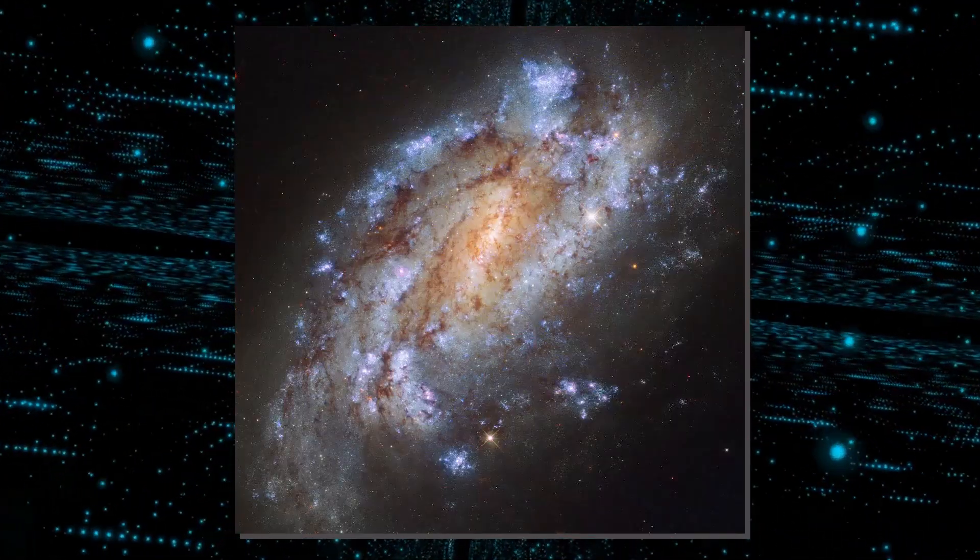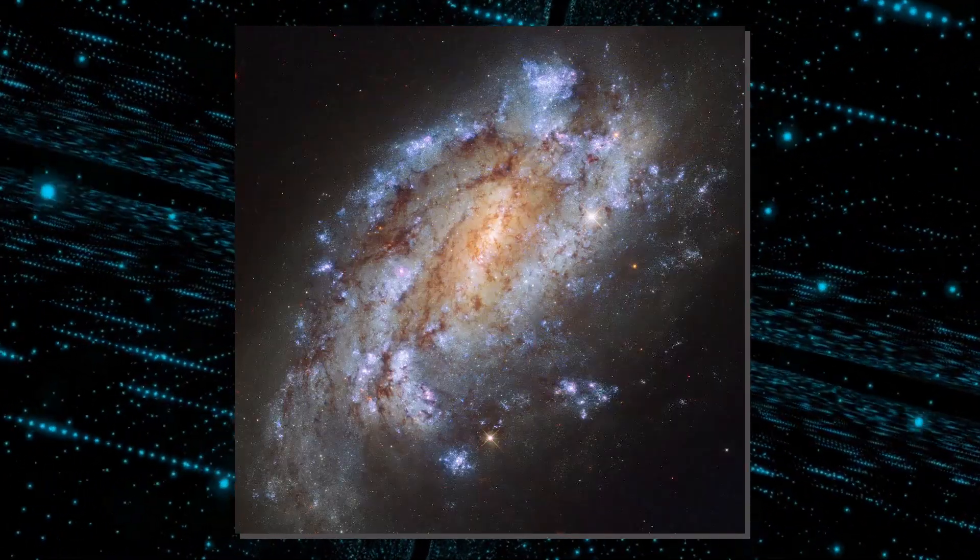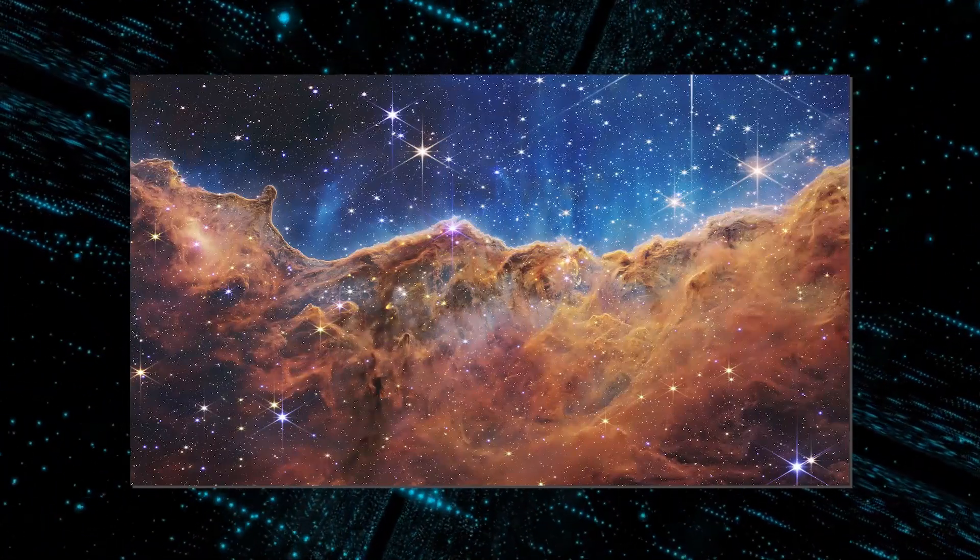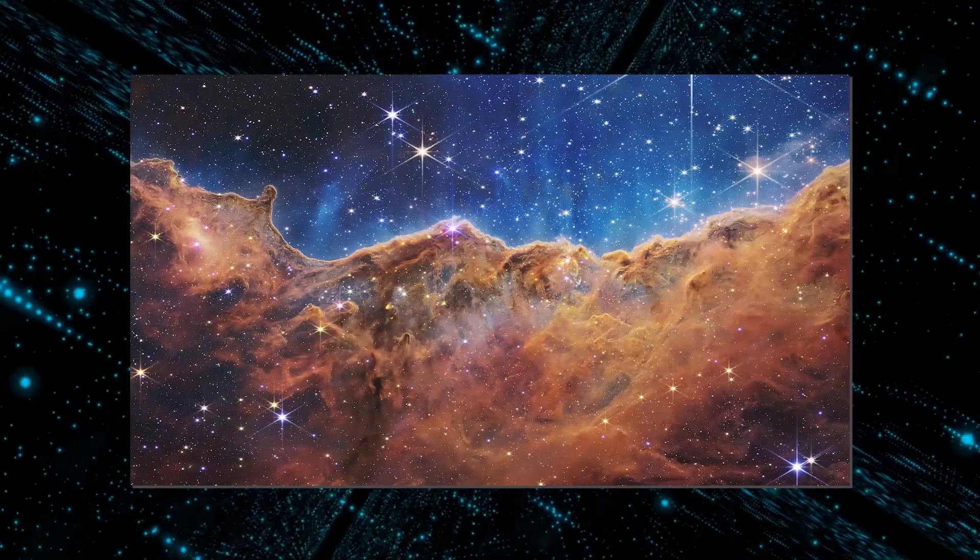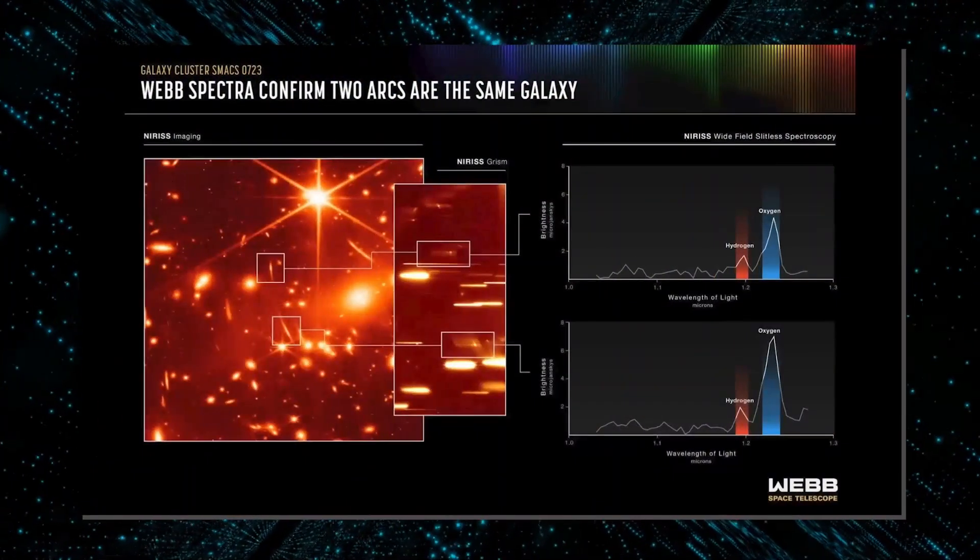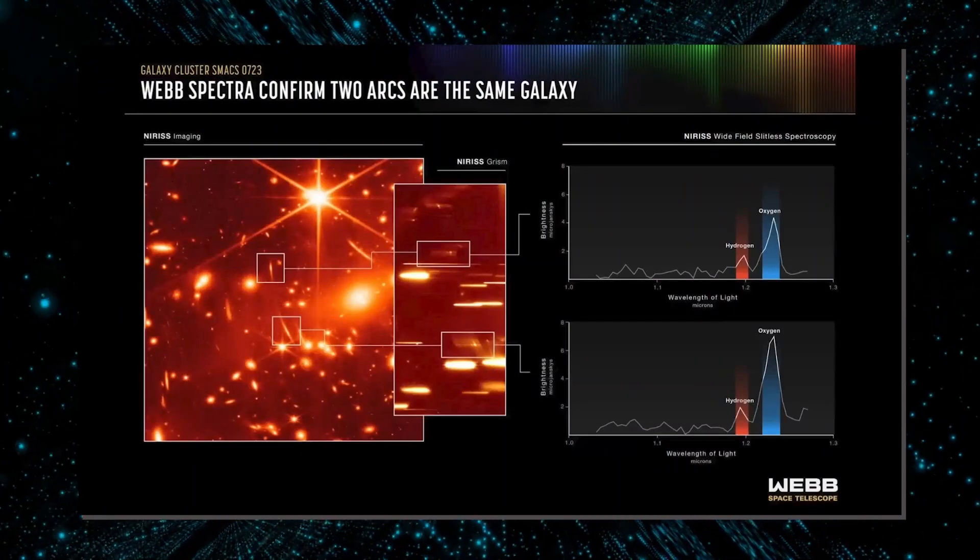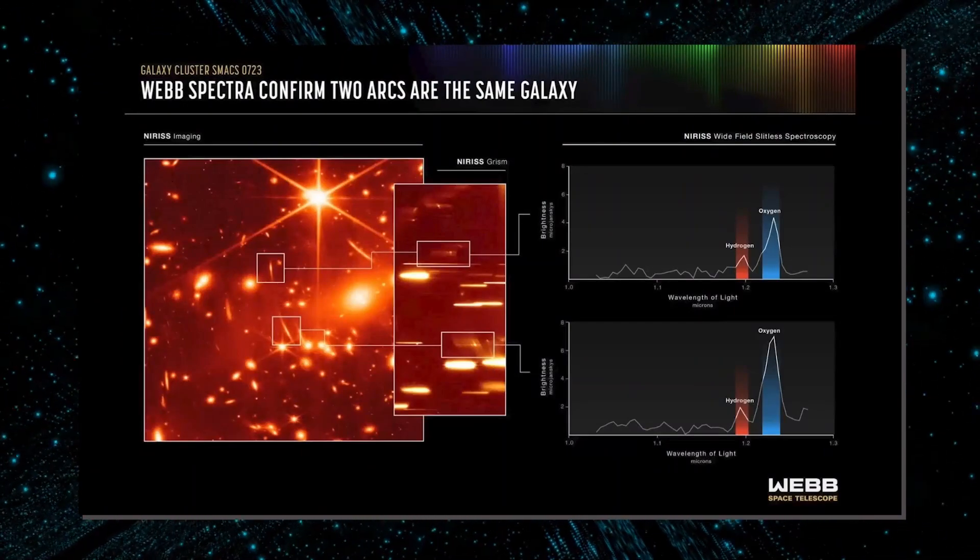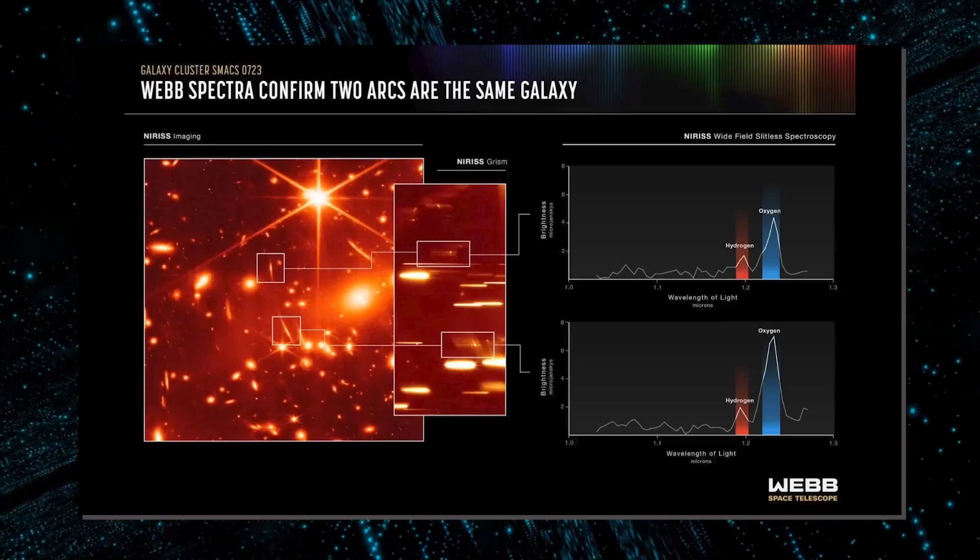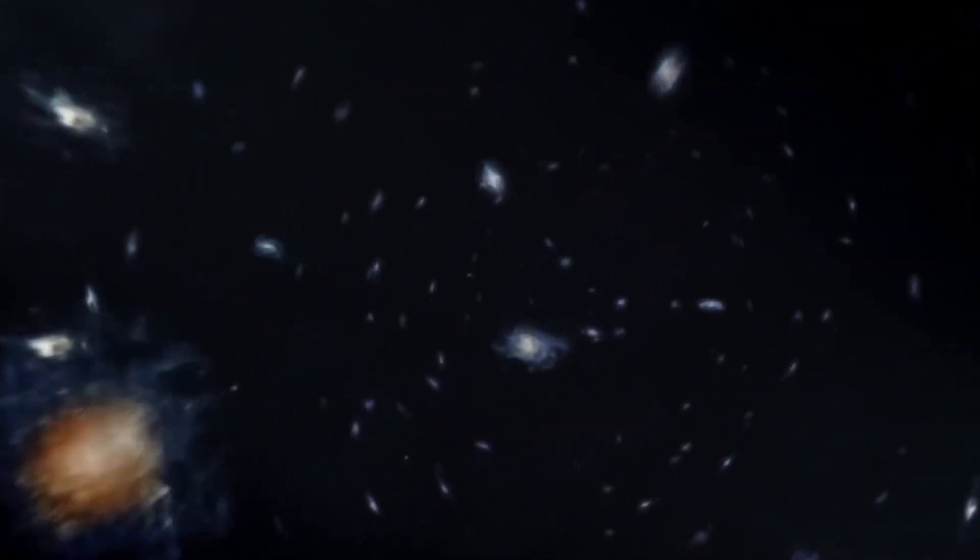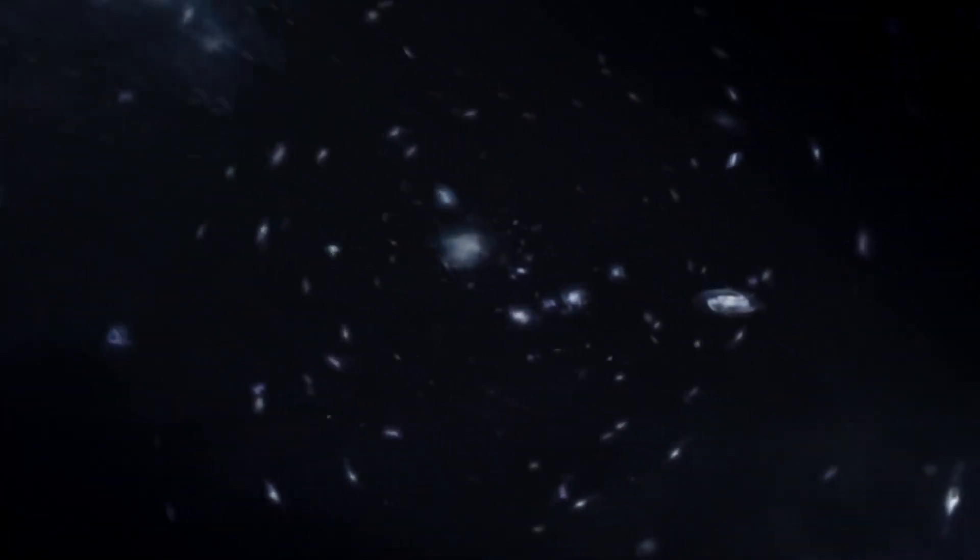Hubble and Webb images of the same galaxies captured at cosmic noon were compared by astronomer Rand Seuss of the University of California, Santa Cruz. In the infrared wavelengths Webb measured, the majority of big galaxies appear substantially smaller than in Hubble's images. It could change the way we perceive how galaxy sizes change throughout time.